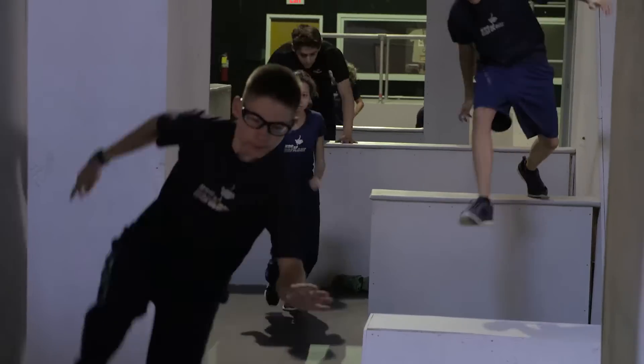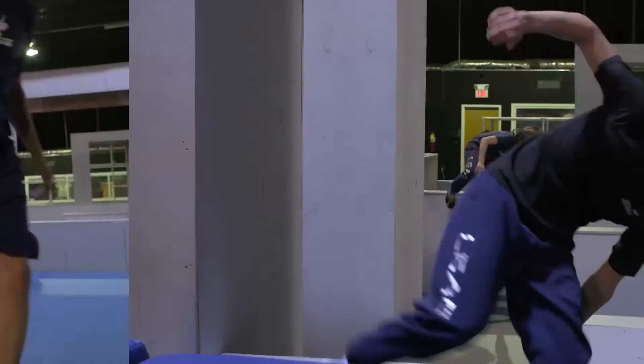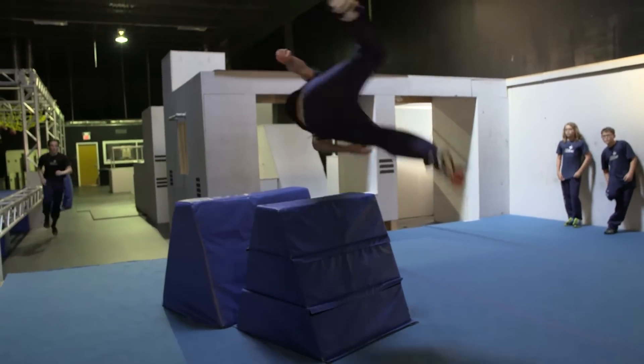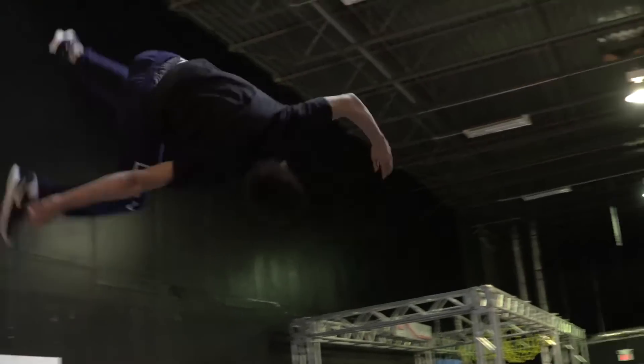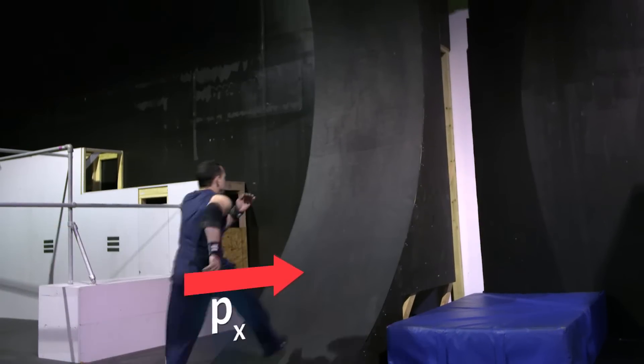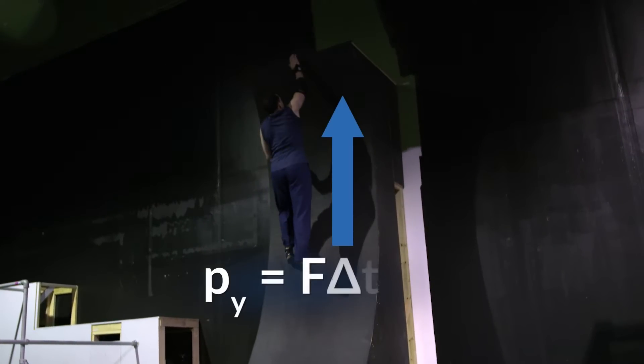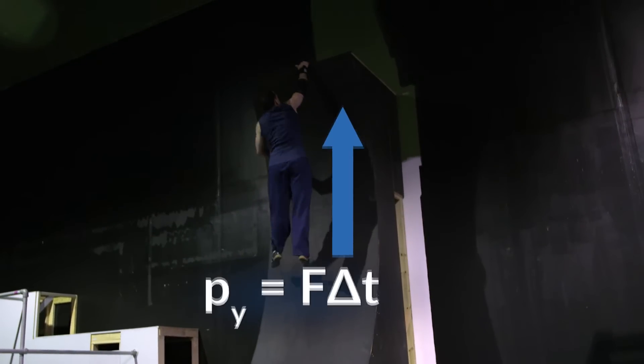Parkour, or free running, was originally used for firefighter and military training. Now people do it for fun and fitness. One of the most popular maneuvers in parkour is the vertical wall run, where a runner tries to reach a vertical height that a regular jump off the ground couldn't manage. He has to redirect his horizontal momentum into vertical momentum to carry him up the wall as far as he can go, and he has to max out the force he exerts over a shorter period of time as his foot hits the wall so he can climb as high as possible.